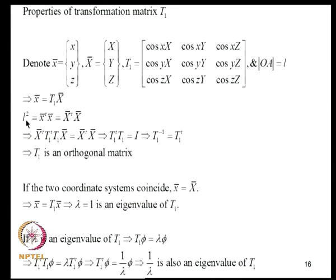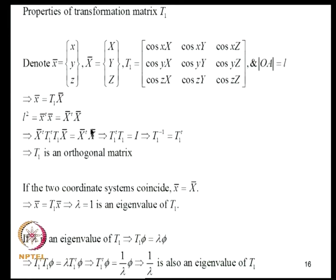The length of vector OA is invariant with respect to coordinate representation, so the length expressed in local coordinates must equal that in global coordinates. Substituting the transformation relation, this requires T1-transpose times T1 to equal the identity matrix; therefore T1-inverse equals T1-transpose, meaning T1 is an orthogonal matrix. This is one important property of the so-called rotation matrix.